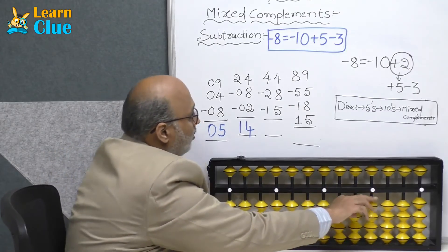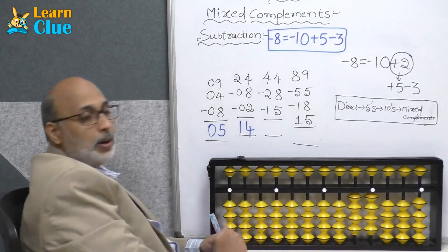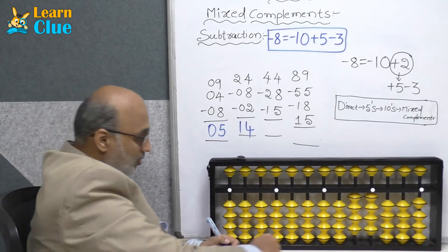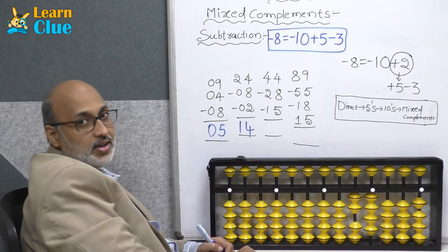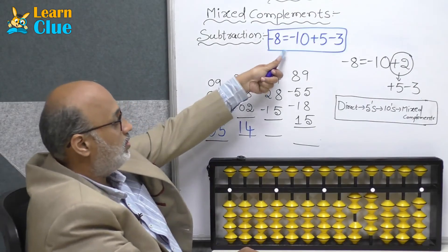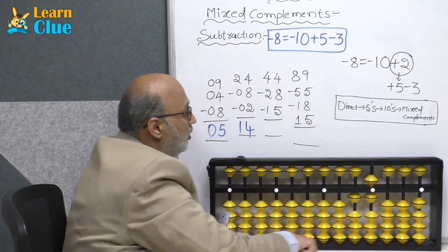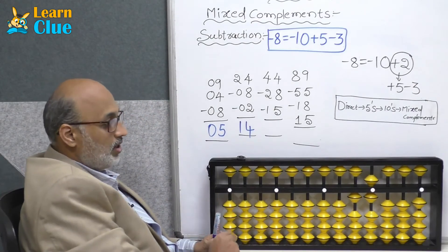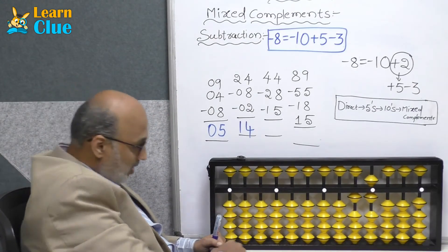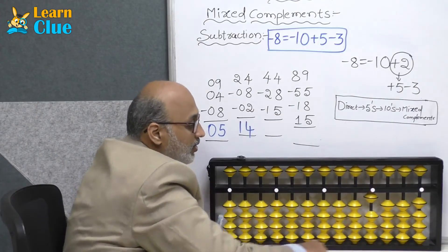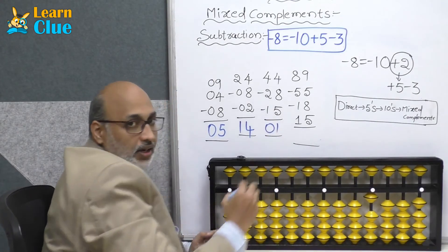Next problem: 44 minus 28 — minus 20 minus 8. Minus 8 is nothing but minus 10 plus 5 minus 3. Now they are asking minus 15. Is it possible? Yes: minus 10 minus 5. The answer is 1.